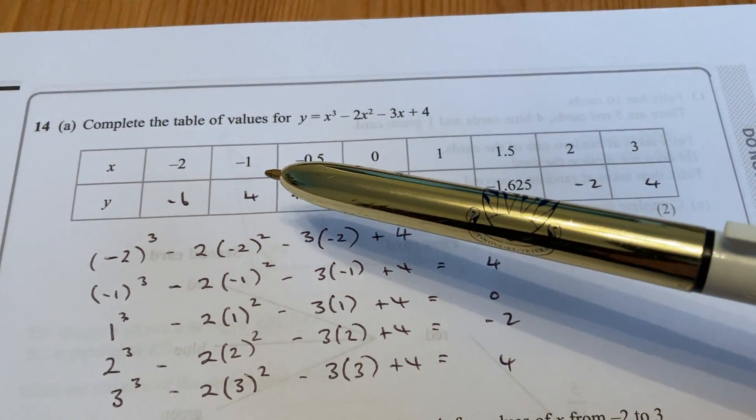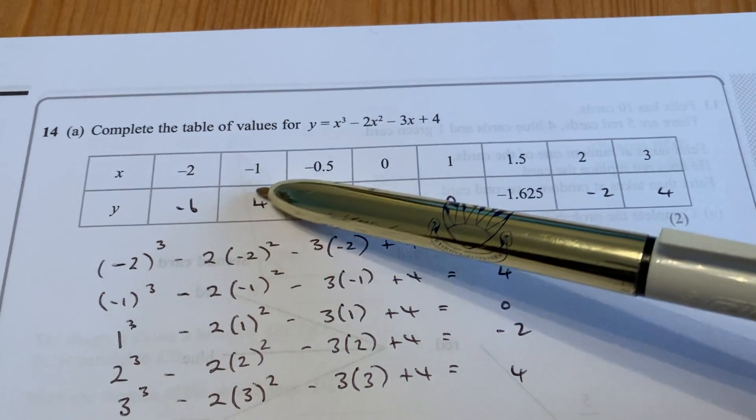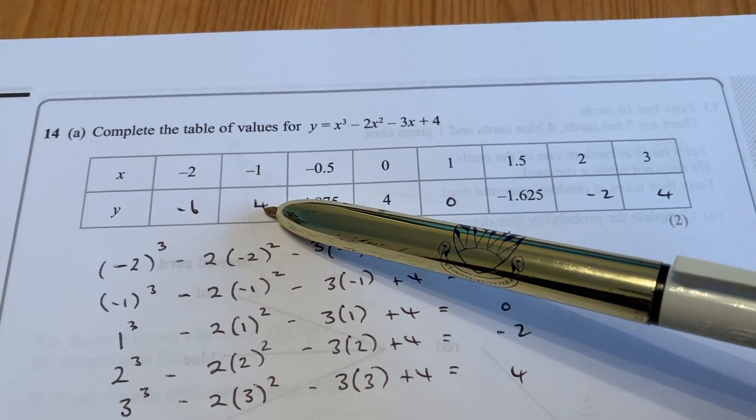So we need to plot the points on the graph. -2, -6 is a point; -1, 4 is a point, etc.